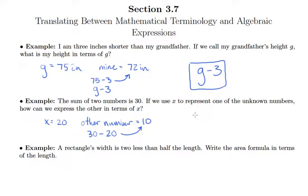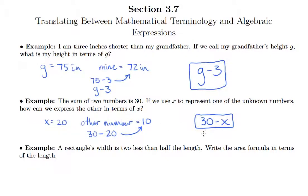20 was just a fake number we plugged in. In general, we don't know what this number should be, so the other number would have to be 30 minus X. Whatever X was, take that away from 30 and the leftovers would be the other number.